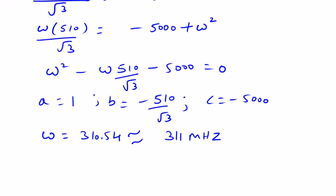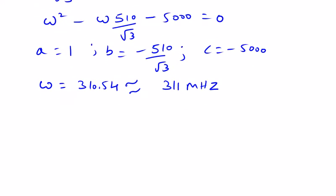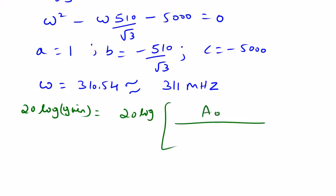Now I have to calculate the gain. The gain expression is 20 log of A₀ divided by the magnitude of (1 + jω/ωP1) times (1 + jω/ωP2), set equal to 0 dB at the gain crossover frequency.